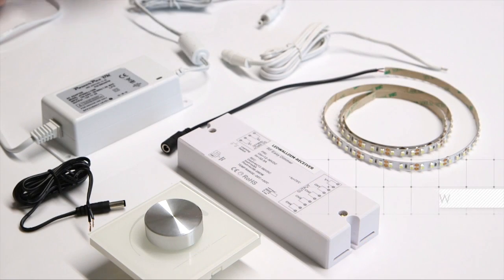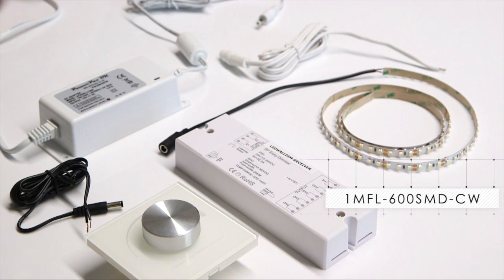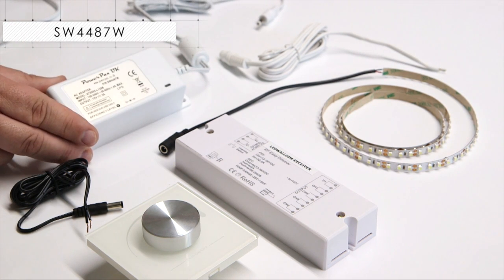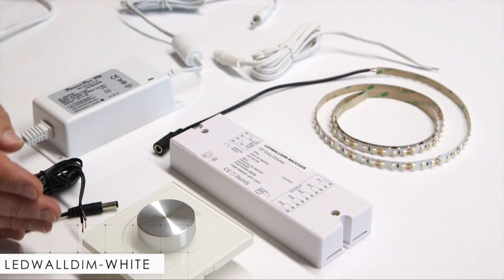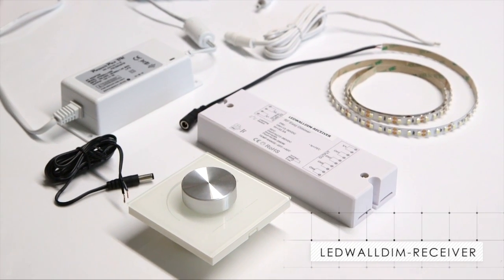Once again, we will use the same tape 1MFL600SMDCW, the same SW4487W power supply, the LED wall dim white and the receiver unit which is supplied separately as order code LED wall dim receiver.